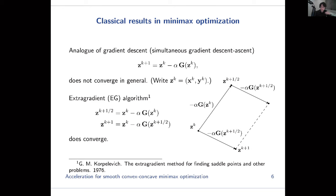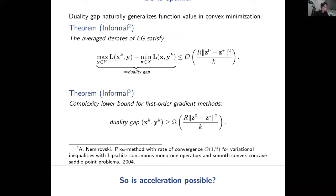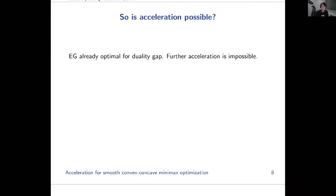The extra gradient method, under the smoothness condition in smooth convex-concave minimax optimization, is known to converge. In fact, the extra gradient method is optimal: the duality gap — which naturally generalizes function value in convex optimization — converges at rate 1/k on the average iterates, and there exists a matching complexity lower bound establishing the optimality up to a constant. So the extra gradient method is already optimal when measuring suboptimality using the duality gap, and because it is already optimal, further acceleration is not possible... or is it?